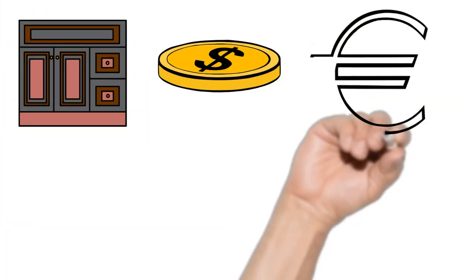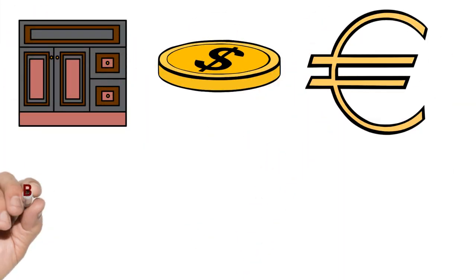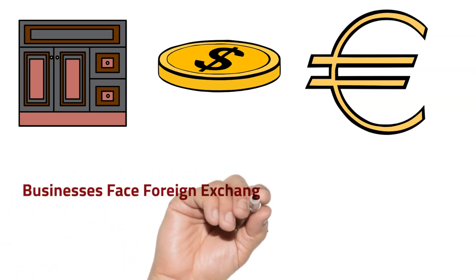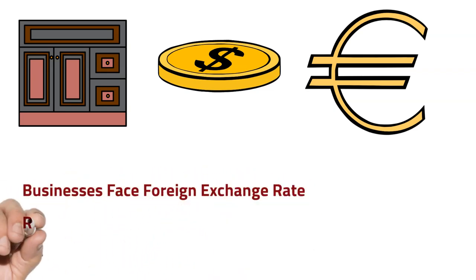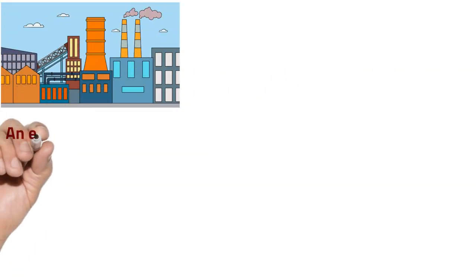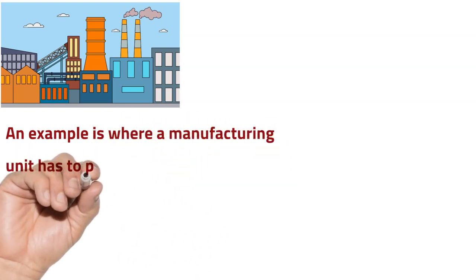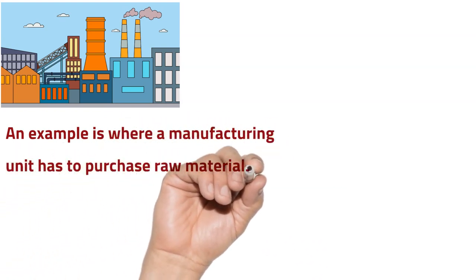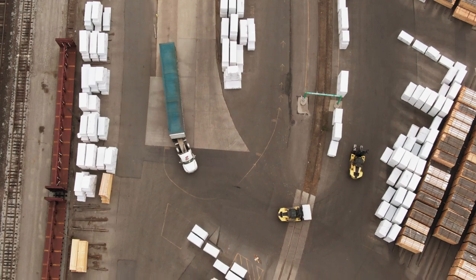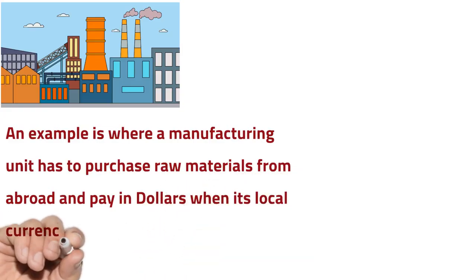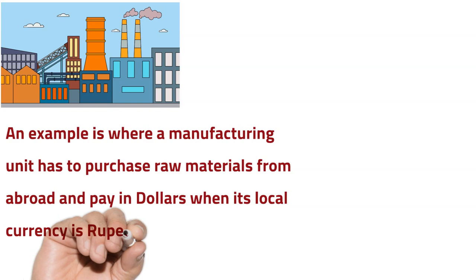If you are seeing the signs for dollars and euros on the screen, we will be talking today about businesses that face foreign exchange rate risks. An example is where a manufacturing company has to purchase its raw materials from abroad and pay in dollars when its local currency is rupees.